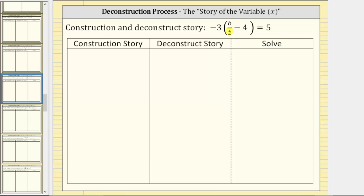We're asked to solve the given equation using the construction and deconstruct story, also known as the story of the variable, or the story of x. To begin, we will write the steps that form the construction of the equation based upon the operations being performed on the variable b. Then we'll write the deconstruct story, which are the steps that will undo the construction of the equation and solve for the variable b.